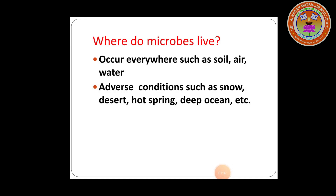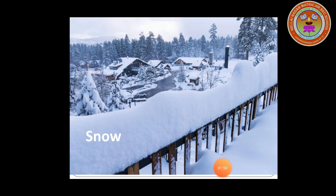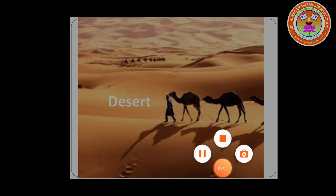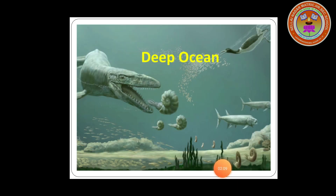Where do microorganisms occur? Microorganisms occur everywhere. They are found in air, water, soil, and even inside our bodies. Some microorganisms can survive in severe conditions such as snow, desert, hot springs, and deep oceans. They remain inactive under unfavorable conditions and become active during favorable conditions.